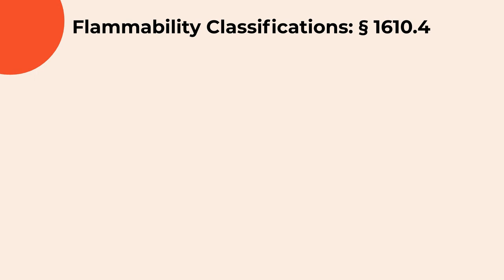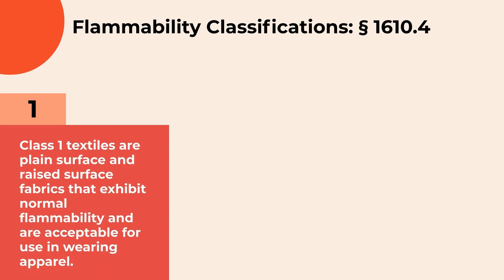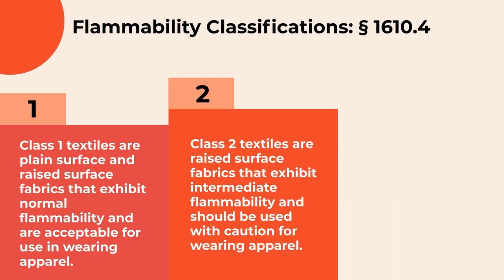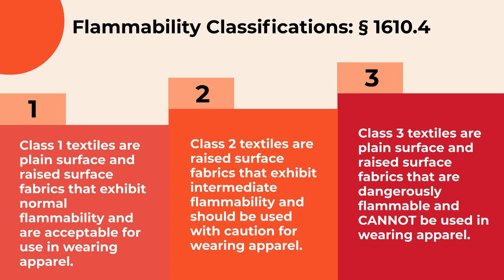Part 1610 specifies testing procedures to determine the flammability of textiles used in apparel as one of three classes. 2-by-6-inch specimens must be tested to determine the class and hazard rating. Class 1 textiles are plain surface and raised surface fabrics that exhibit normal flammability and are acceptable for use in wearing apparel. Class 2 textiles are raised surface fabrics that exhibit intermediate flammability and should be used with caution — this class is not applicable to plain surface fabrics. Class 3 textiles are dangerously flammable and cannot be used in wearing apparel.